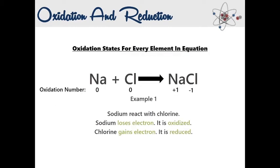Looking back at the chemical reaction, you can see figures below every component — these are oxidation numbers. The oxidation numbers below the sodium and chlorine atoms are zero, showing that these two atoms are neutrally charged. At the right-hand side of the reaction, each element in the compound has charges: plus one for sodium and negative one for chlorine. These oxidation numbers help us track the changes of charges in each element, reminding us that Na and Cl started with no charges and end up having charges after an electron is transferred from sodium to chlorine.